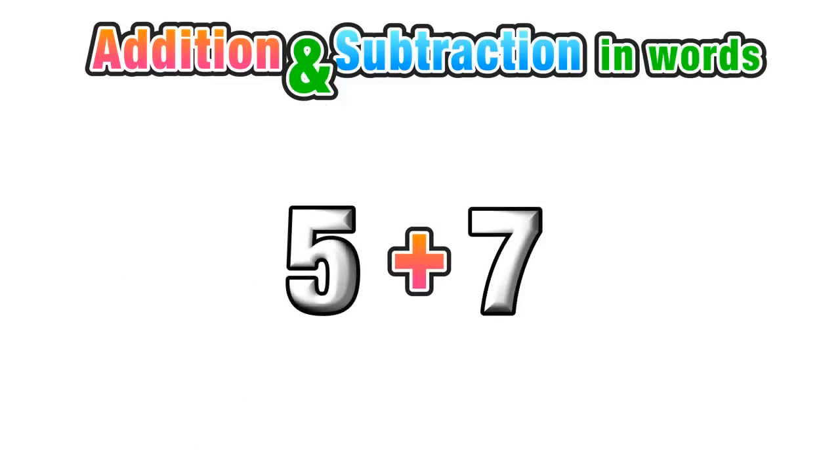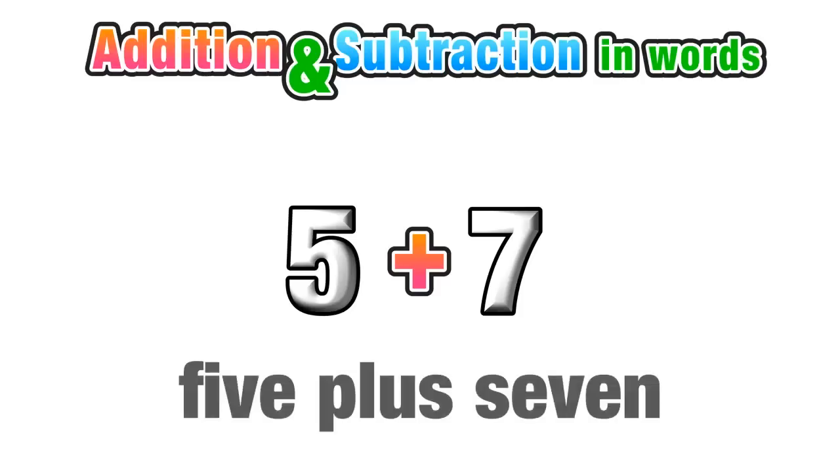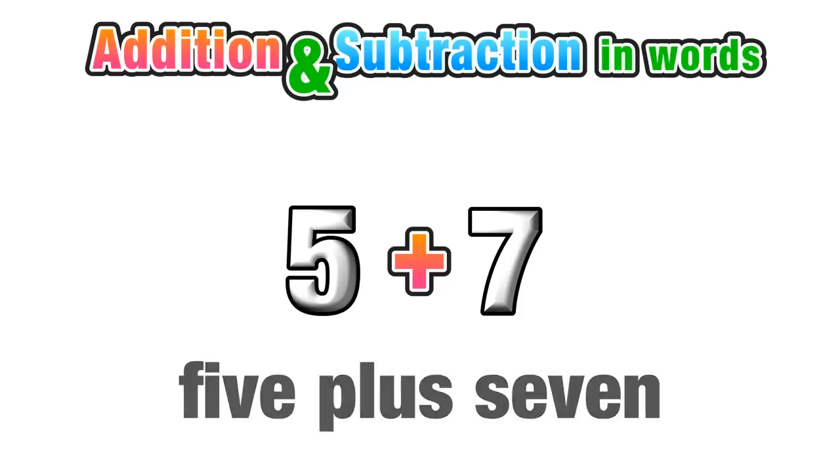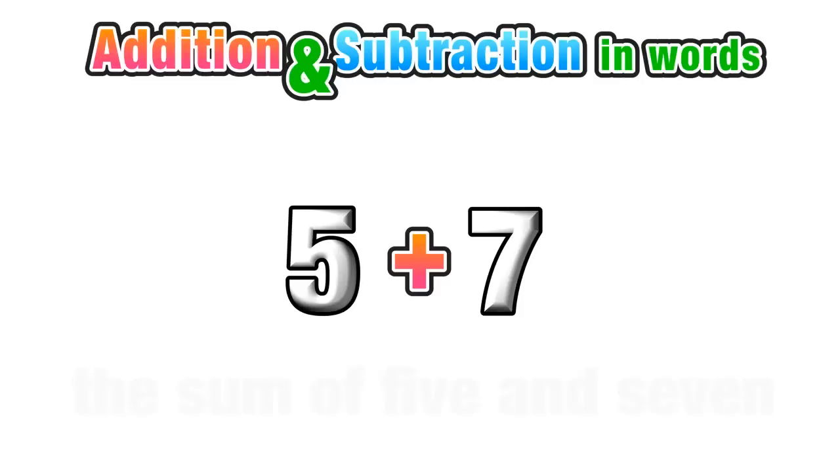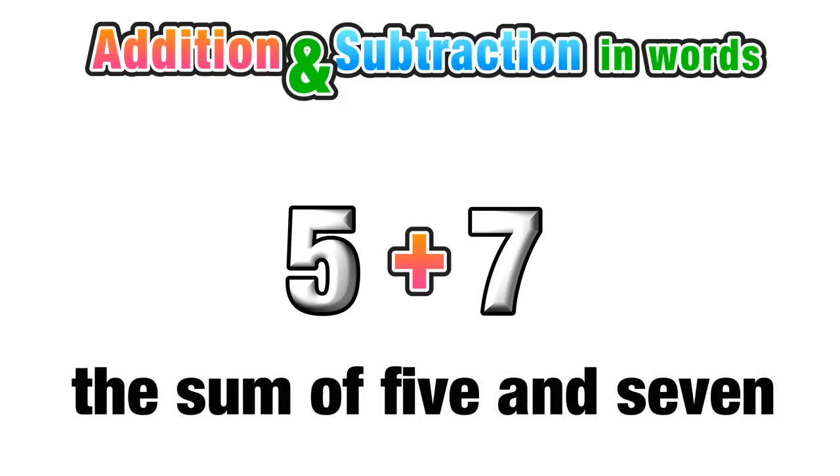If we need to describe an expression in words, we have a whole bunch of phrases we can use. In this case, we could say 5 plus 7, or we could say the sum of 5 and 7.